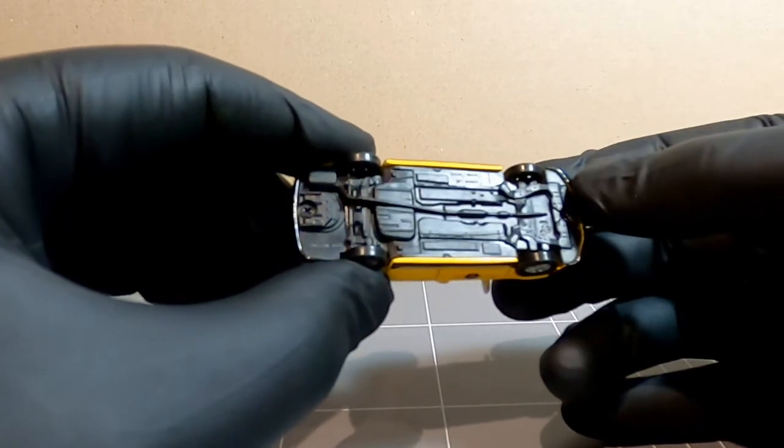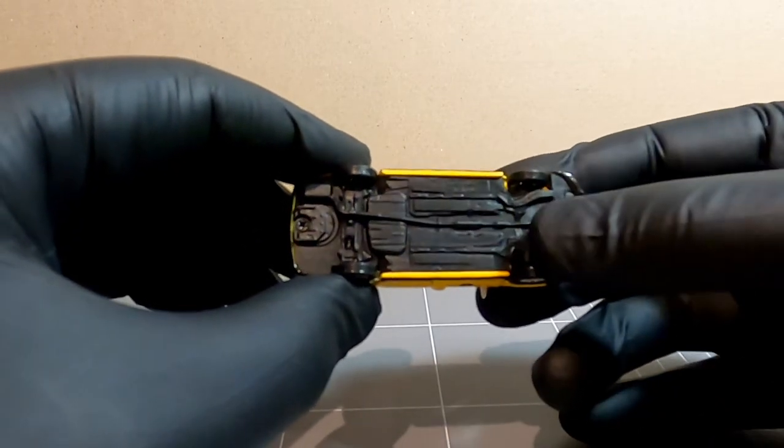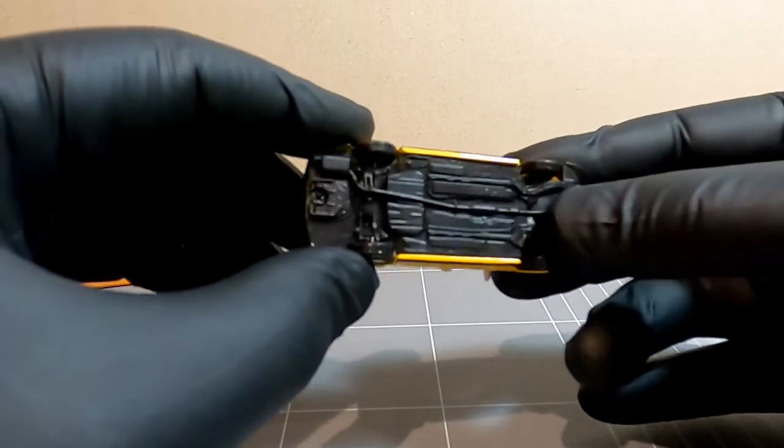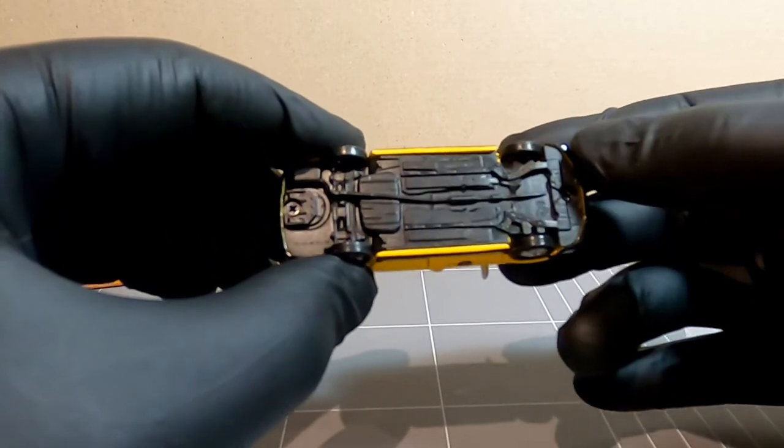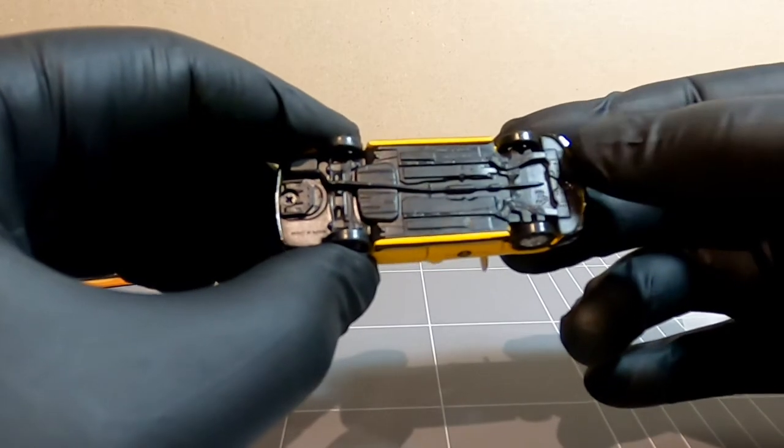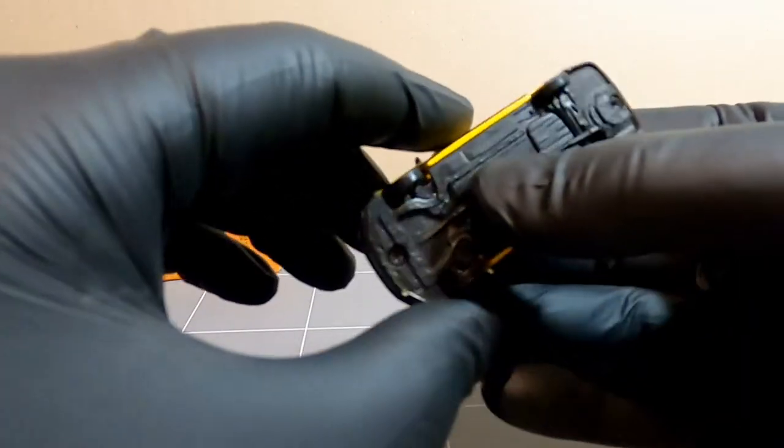So if you want to take it apart, change the wheels over, paint the interior, do whatever you like with it, it's a lot easier than trying to drill out a base and then mess the base up and destroy the posts.